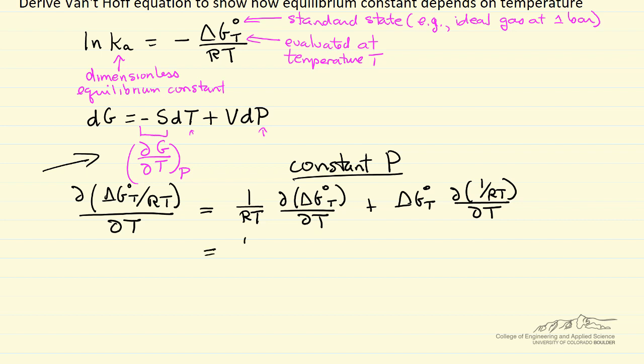So this first term is going to become minus delta S, and the second term we differentiate. Of course R is constant, so let me put R here, and I end up with minus one over T squared. Next I'm going to substitute for delta G in terms of its definition, so let me just pause and put in that term.